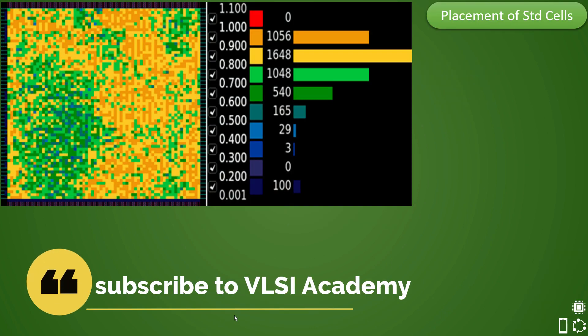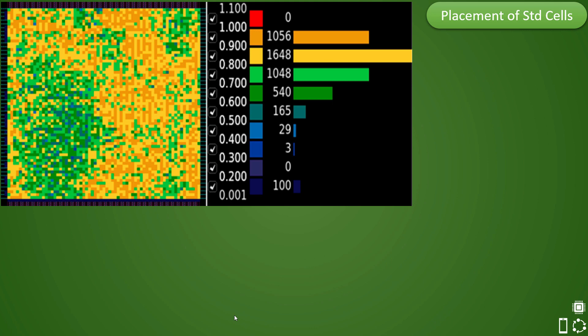We discussed earlier that if cell density packing is high, then it might be possible that routing engine will face congestion while doing the routing for the cells because cells would have consumed lower routing resources. Hence, lesser tracks would be available for routing wherever the cell density is high.